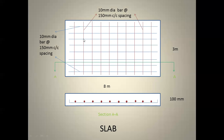Looking from the top, we can see the reinforcement. The red-colored bars are the x-direction reinforcement and the blue-colored bars are the y-direction reinforcement. The red bars are 10 mm diameter bars at 150 mm center-to-center spacing. Similarly, the blue bars are 10 mm diameter at 150 mm center-to-center spacing.